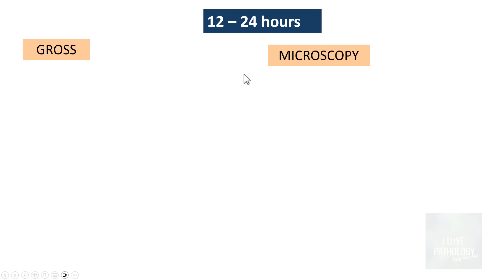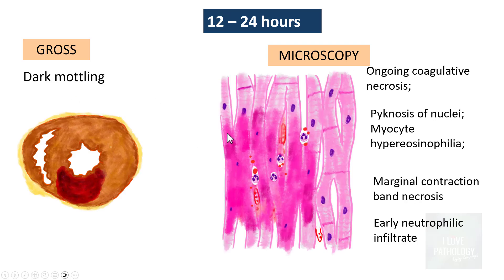From 12 to 24 hours, the mottling is increased. Microscopically, you find well-formed coagulative necrosis: the cytoplasm is densely eosinophilic and nuclei are slightly paler, sometimes becoming pyknotic. Karyolysis and pyknosis are features of nuclear death. You also find myocyte hypereosinophilia, marginal contraction band necrosis, hemorrhage, and early neutrophilic infiltrate — neutrophils being the first cells to arrive in acute inflammation.